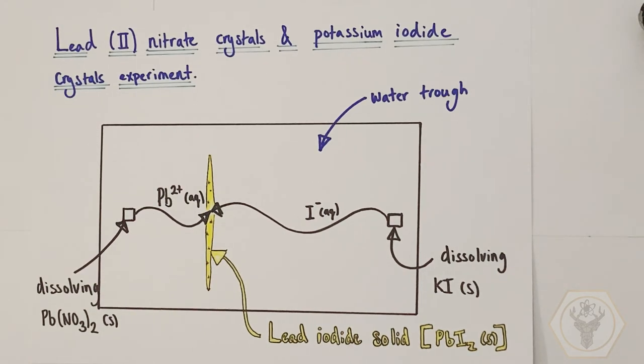Now when these two reactants meet, they form a beautiful yellow sparkling solid of lead iodide crystals, and they would look like this.